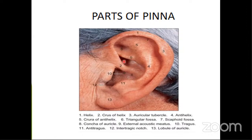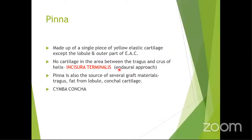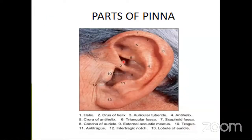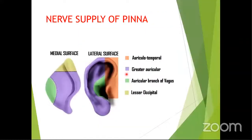The cymba concha is the cartilage that serves as a landmark for McKewen's triangle, which is a very important landmark.